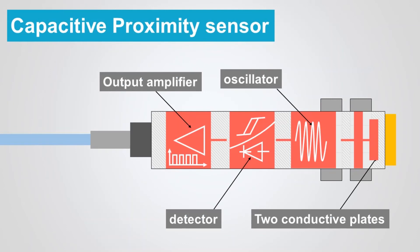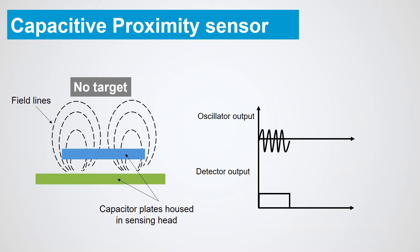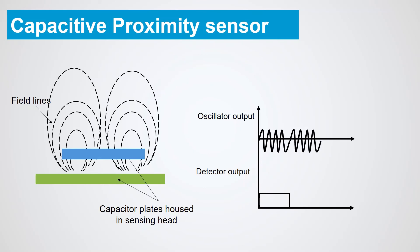In capacitive sensors, two conduction plates at different potentials are housed in the sensing head and positioned to operate as an open capacitor. Air acts as an insulator; at rest, there is little capacitance between the two plates. Like inductive sensors, these plates are linked to an oscillator, a Schmitt trigger, and an output amplifier. As a target enters the sensing zone, the capacitance of the two plates increases, causing oscillator amplitude change, in turn changing the Schmitt trigger state, and creating an output signal.